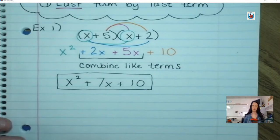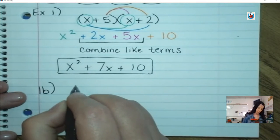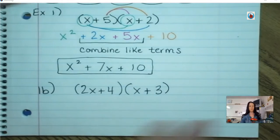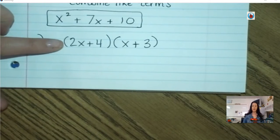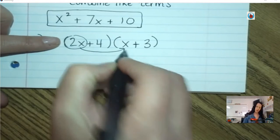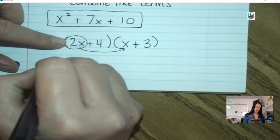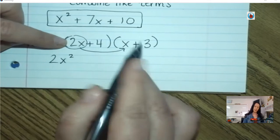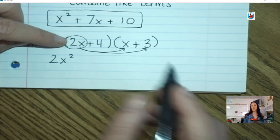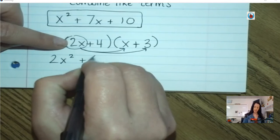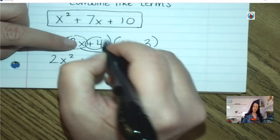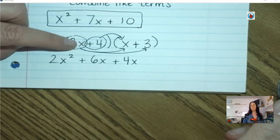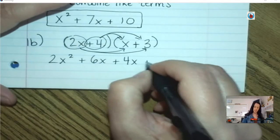Let's try another one: 2x plus 4 times x plus 3. Take your first term and multiply it by the other first term — 2x times x is 2x squared. Then we do the outer terms: 2x times 3, a positive 2x times a positive 3, that's positive 6x. Now the inner terms: 4 times x, a positive 4 times a positive x, so positive 4x. And then the last terms: 4 times 3, positive 4 times positive 3, is positive 12.